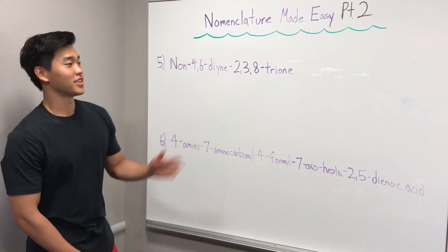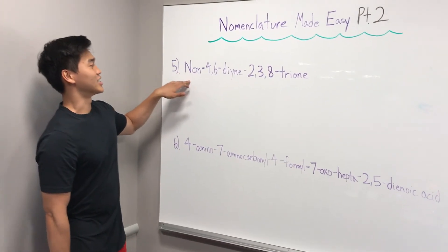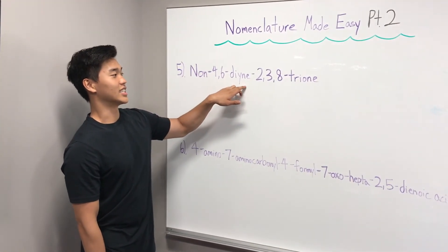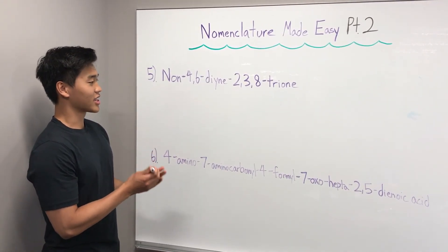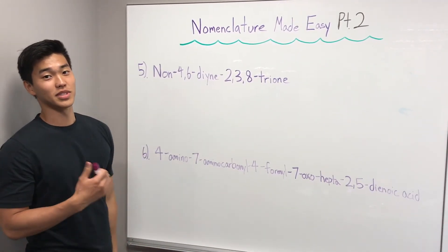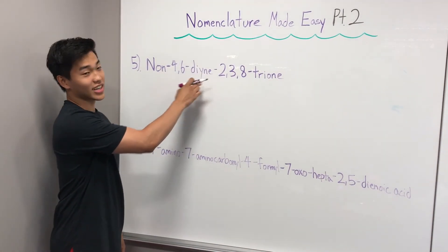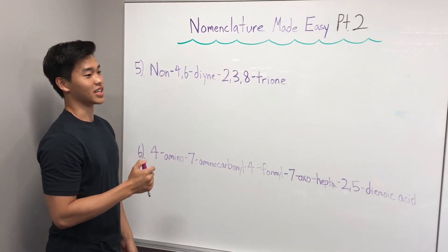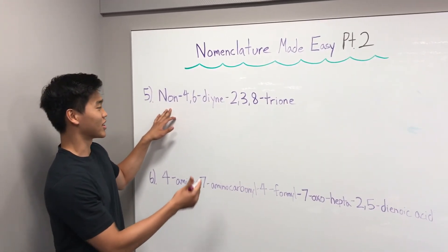Alright, welcome back. Hopefully you got the three answers for these. If not, we're going to go over them right now. Starting with number five, it's non-4,6-diene-2,3,8-trione. First we want to look at the parent group, which is non, which means nine. So I'm going to draw that.